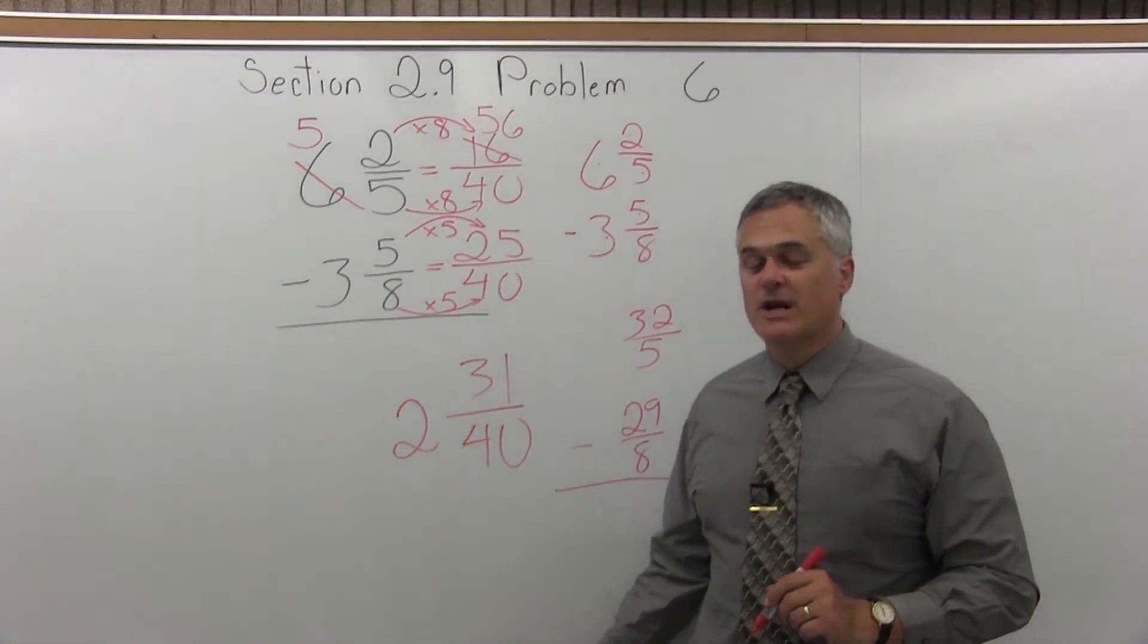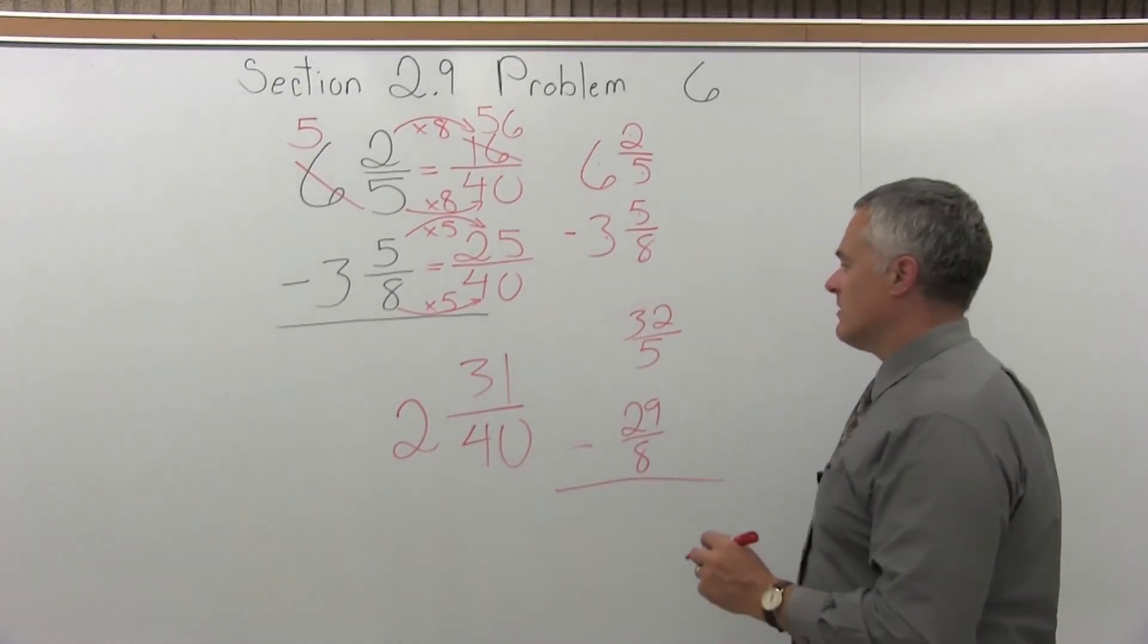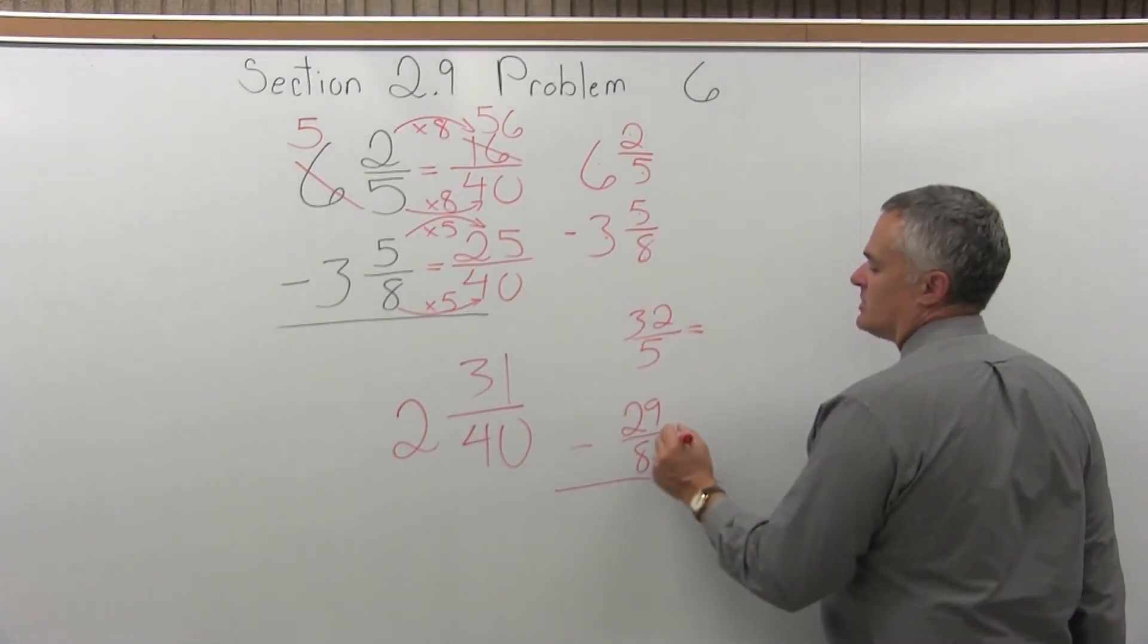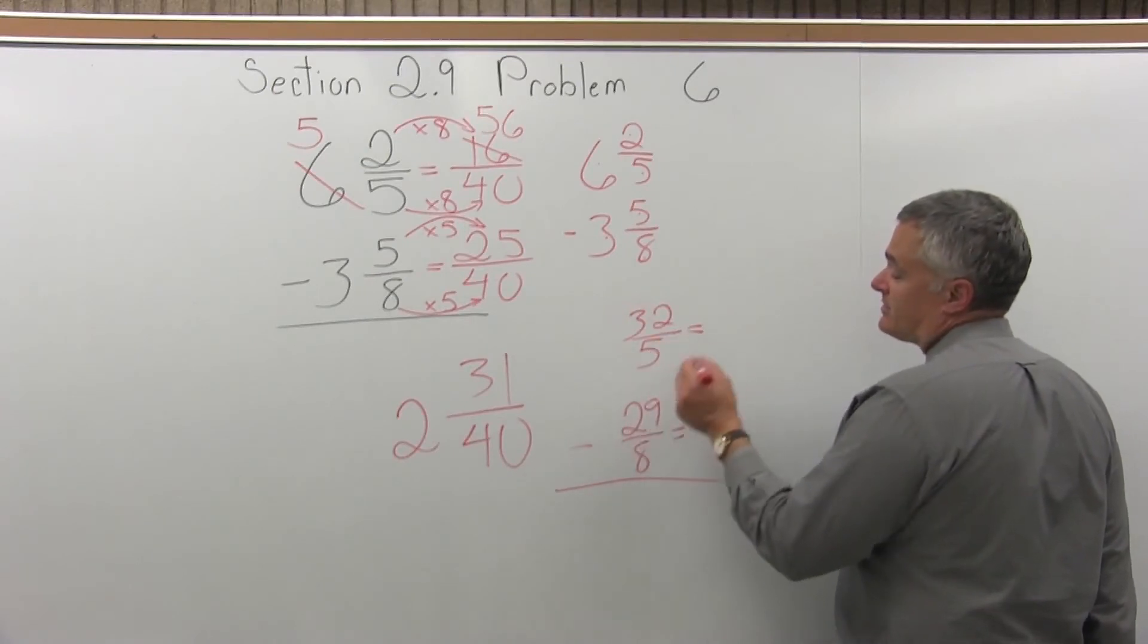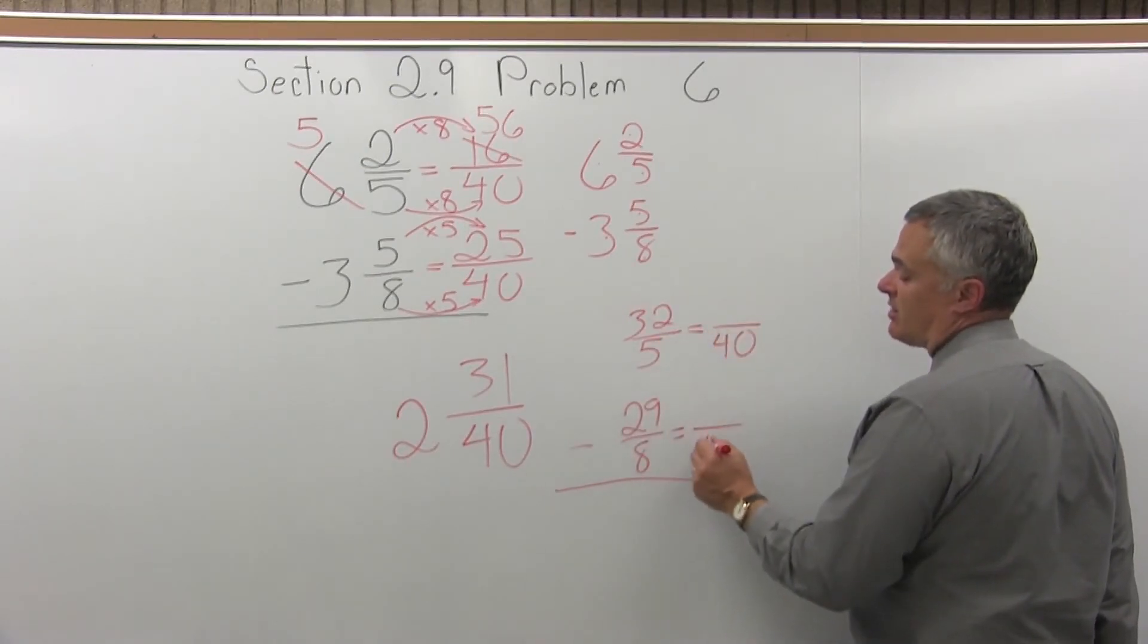Subtract those improper fractions. I won't have to borrow now. So my denominators are still 5 and 8, so 40 is still a good common denominator.